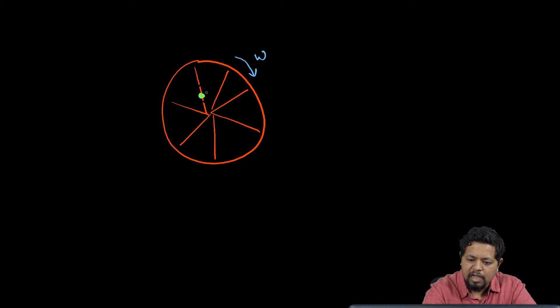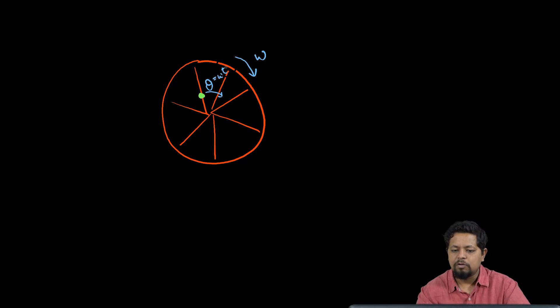As this wheel rotates with angular speed omega, the angular position theta is given by theta equal to omega t. Because it is travelling on the spoke with constant speed u, we have to find out the trajectory of the bead. Let us go ahead and solve this problem.